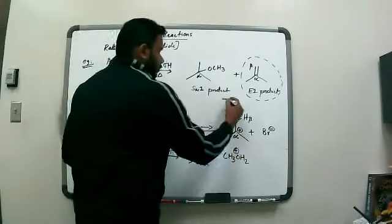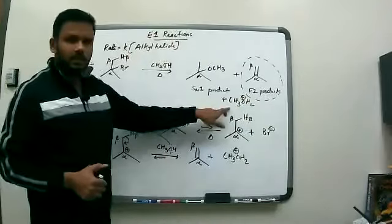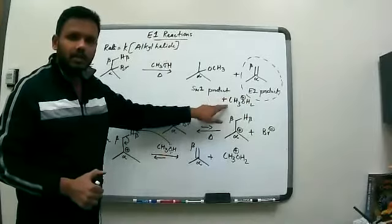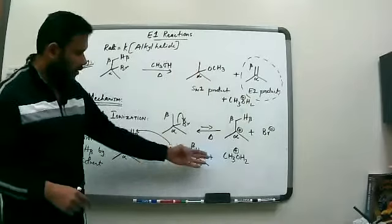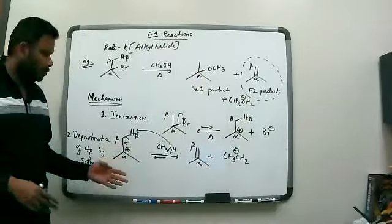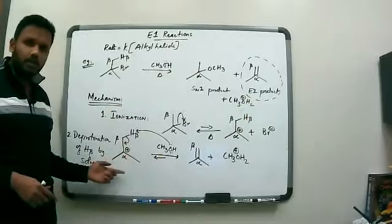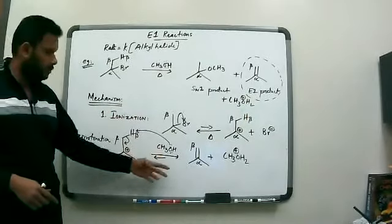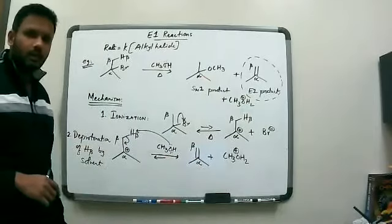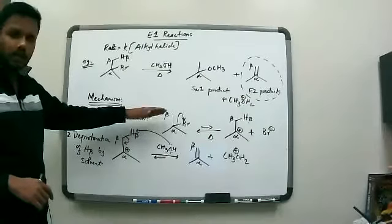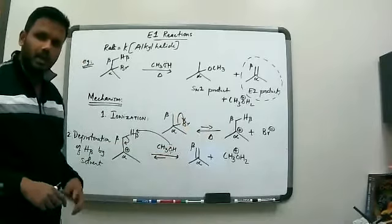The protonated methanol is our byproduct — I missed it out in the scheme earlier, but it's formed from both our SN1 and our E1 reaction. The only step where E1 is different from SN1 is the second step: the deprotonation step. E1 is strictly two steps — first an ionization to form a carbocation, then deprotonation of a beta hydrogen to give us the alkene product.